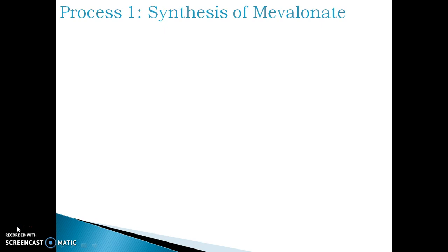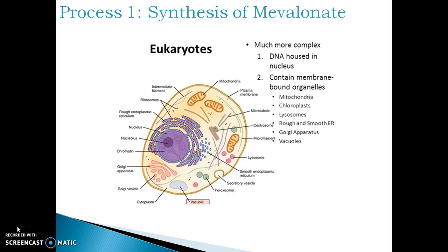Let us now see the first process, that is synthesis of mevalonate. Here we see a figure of a normal eukaryotic cell. The products of glycolytic cycle in it are subjected to an amphibolic citric acid cycle in the mitochondria, which pours out citric acid in the cytosol surrounding the mitochondria. Here the citric acid is converted into acetyl coenzyme A. These acetyl coenzyme A are the precursor of cholesterol.